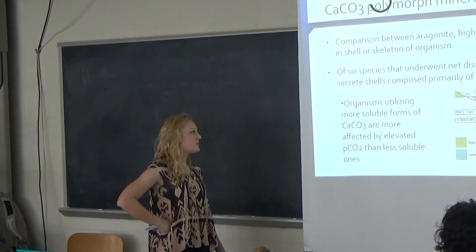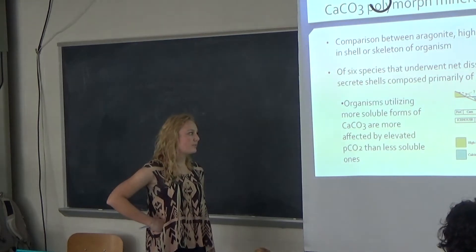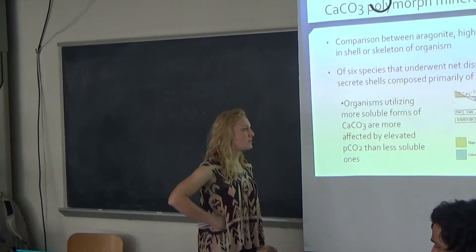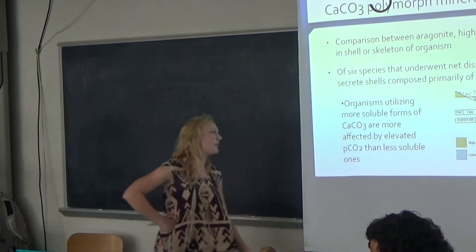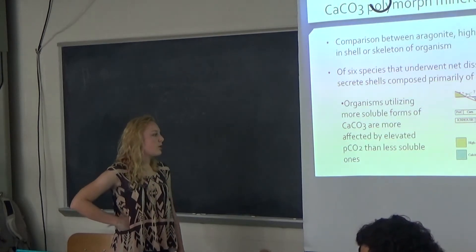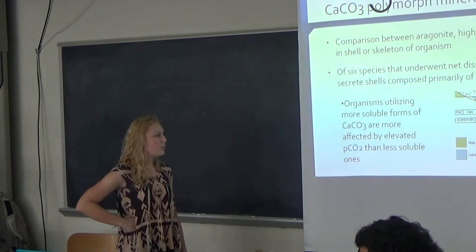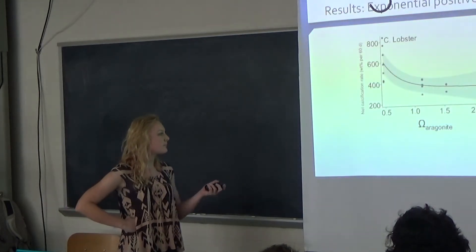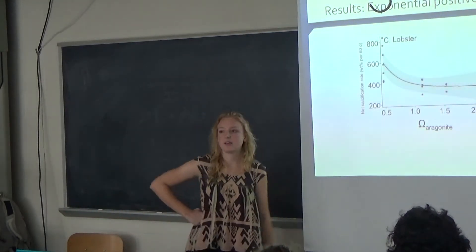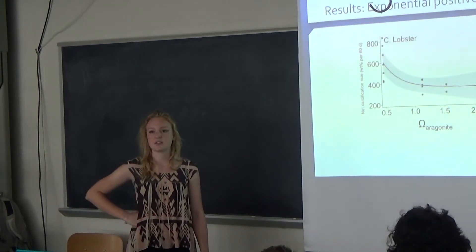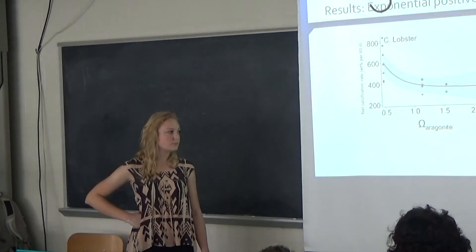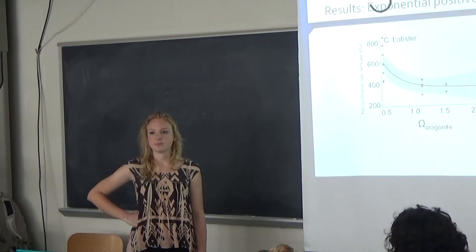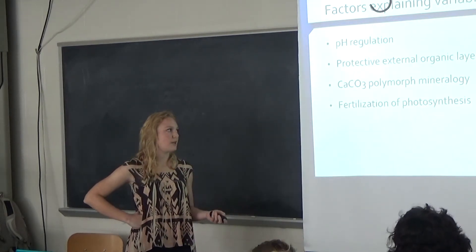We know that organisms that have utilized the more soluble forms of calcium carbonate, which is the aragonite and the high magnesium calcite, are obviously more affected by elevated calcium carbonate than the less-soluble ones. That's part of the reason why in the earlier graphs, they analyzed the aragonite compared to the calcite because they know it's more soluble, and because of that, we can see varying effects of pH levels being produced.